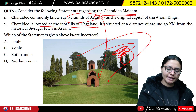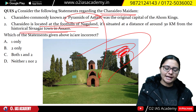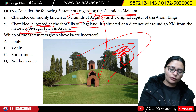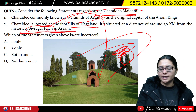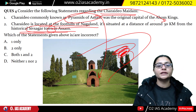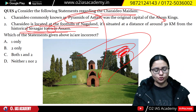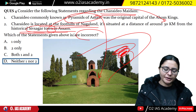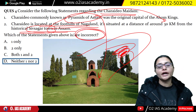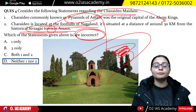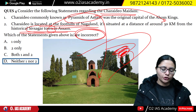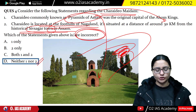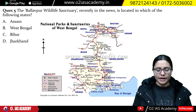You should know the location of Assam's Charaydeo Maidam. You have to identify the correct statement. Because both of these statements are correct, the answer is neither one nor two — meaning both statements are correct.